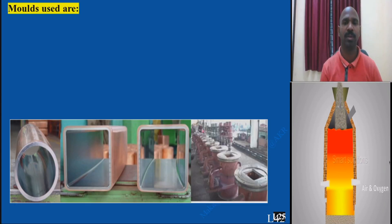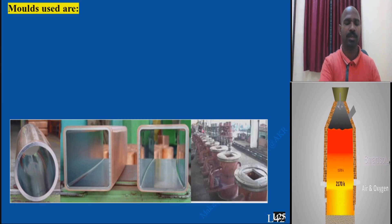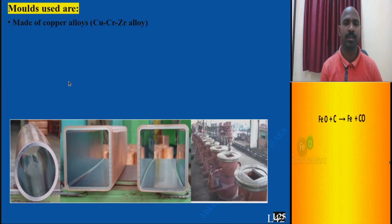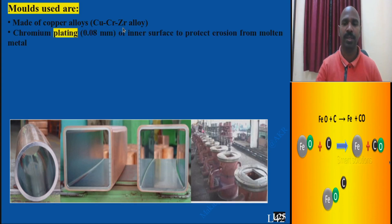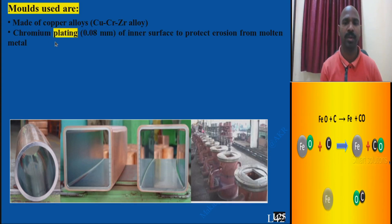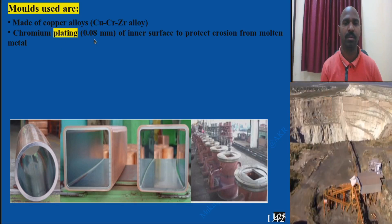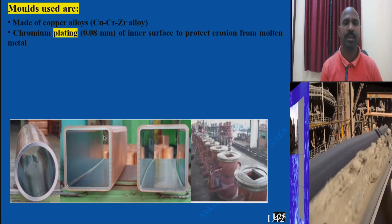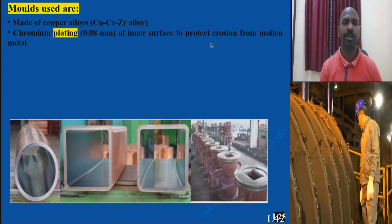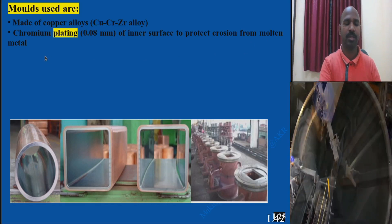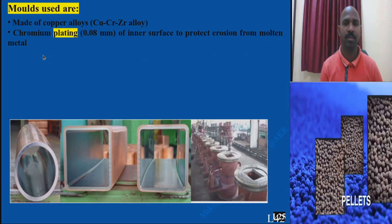Welcome to lecture 42. Today I am going to speak about one part in the continuous casting process: mold making. What are the mold materials used in the continuous casting process? Mainly it is made up of copper alloys. The alloying elements with copper are chromium and zirconium. Chromium is used for plating around 0.08mm thickness on the inner part of the mold, mainly to protect against erosion arising due to molten metal flow during the casting process.